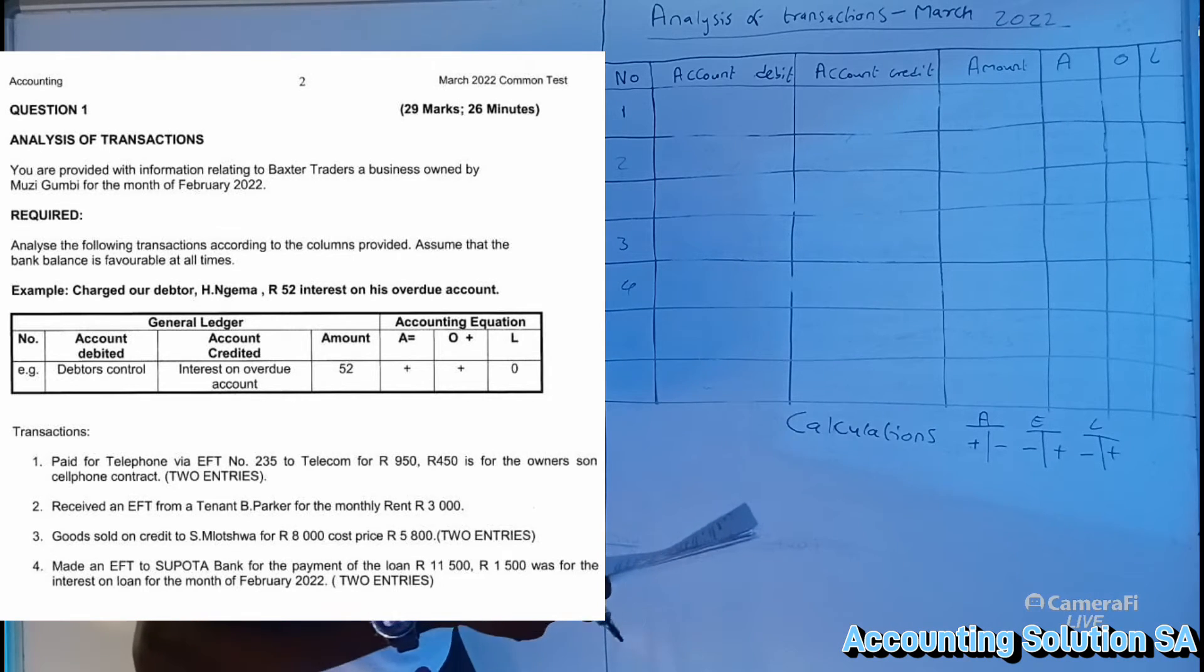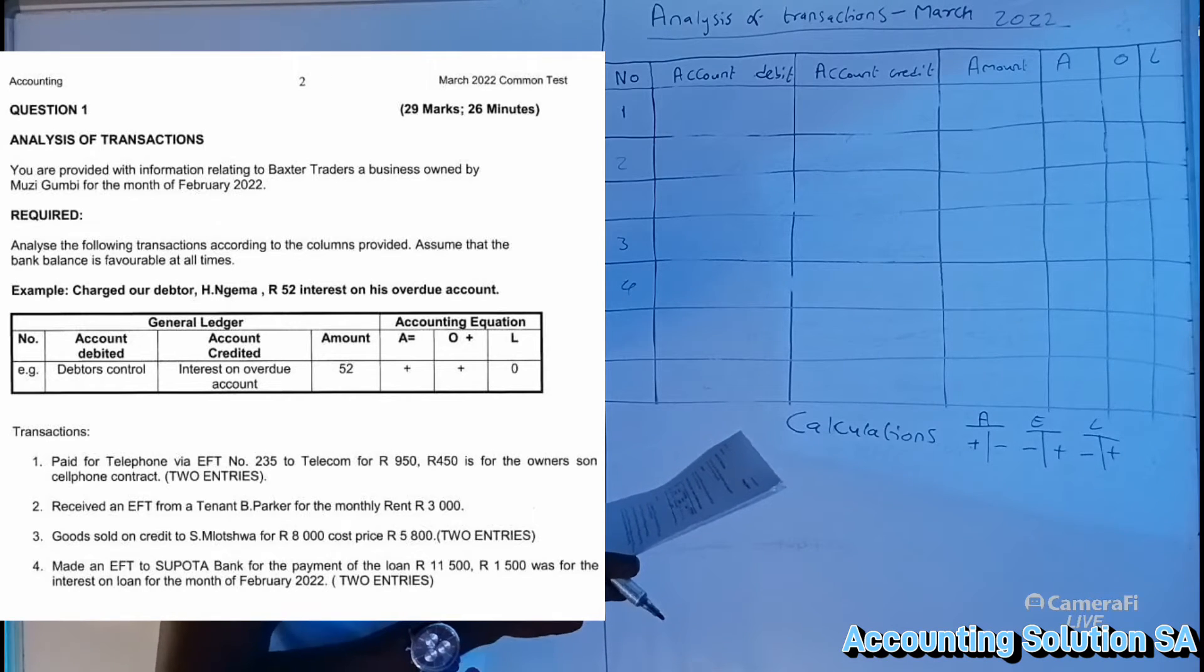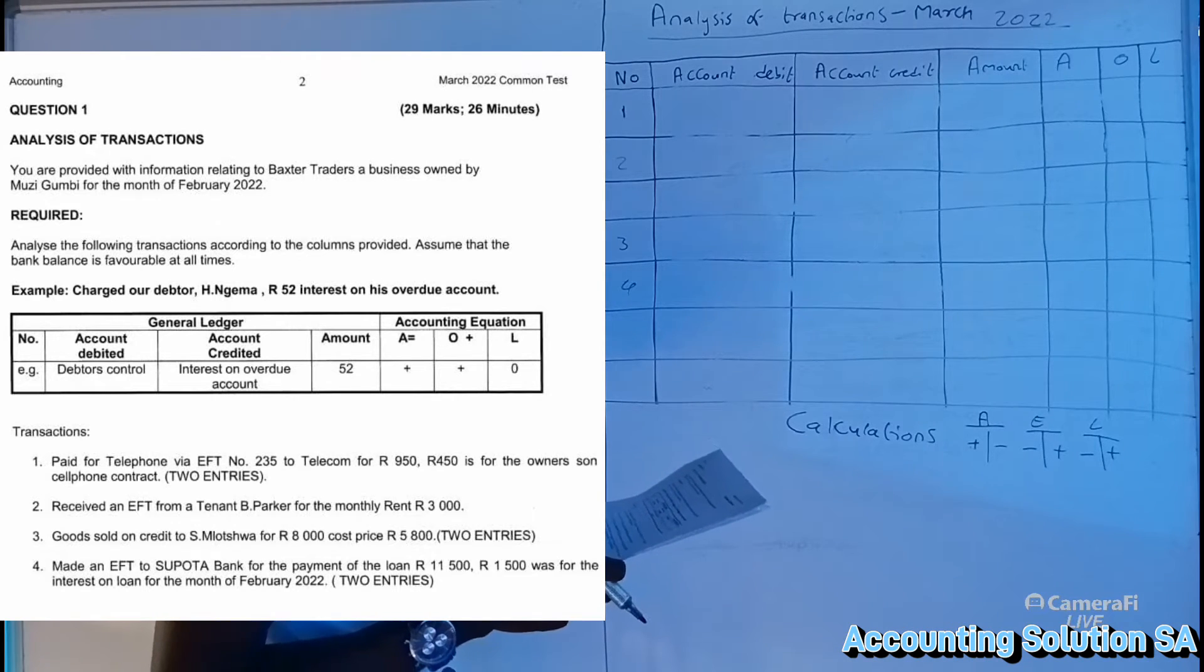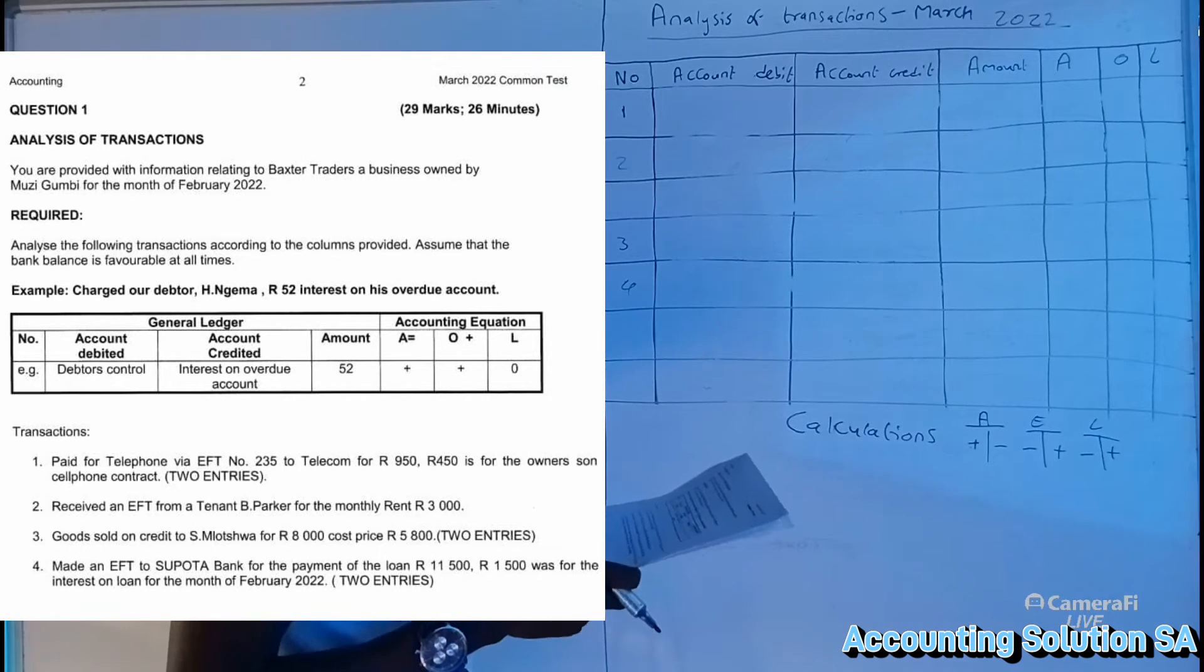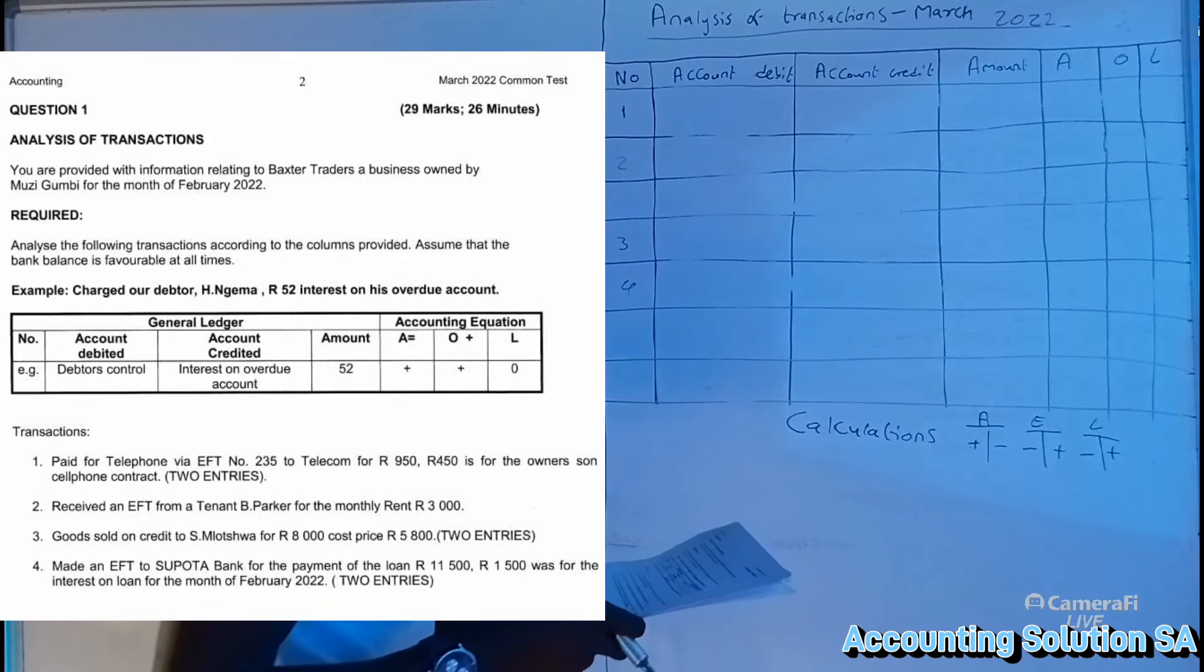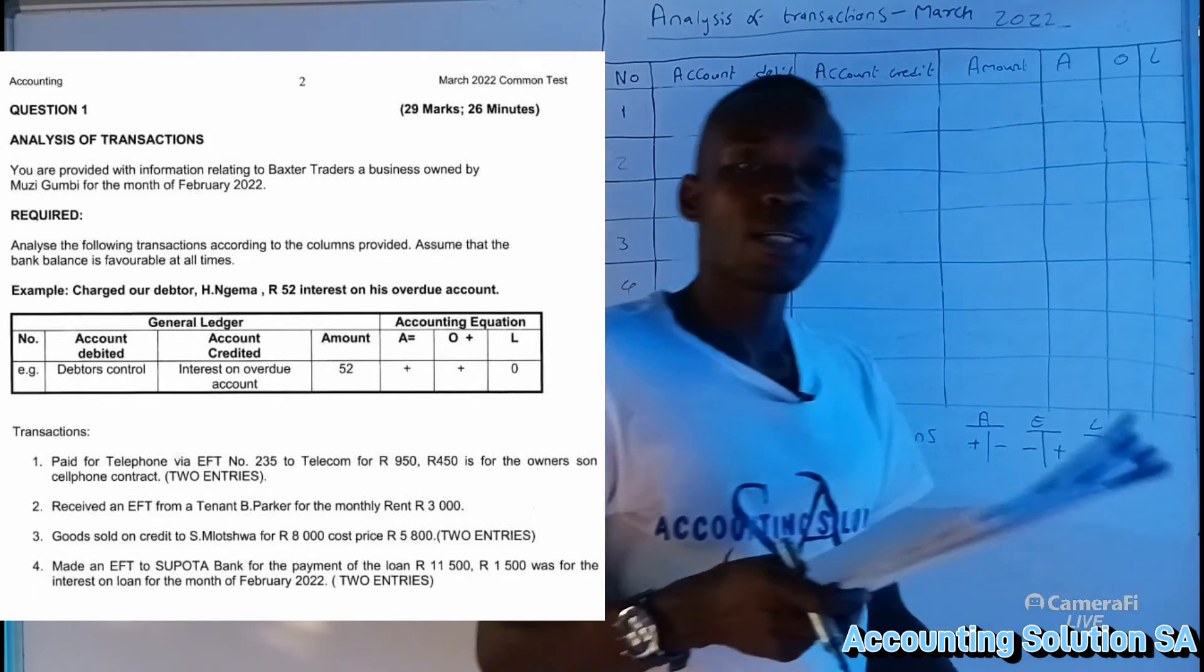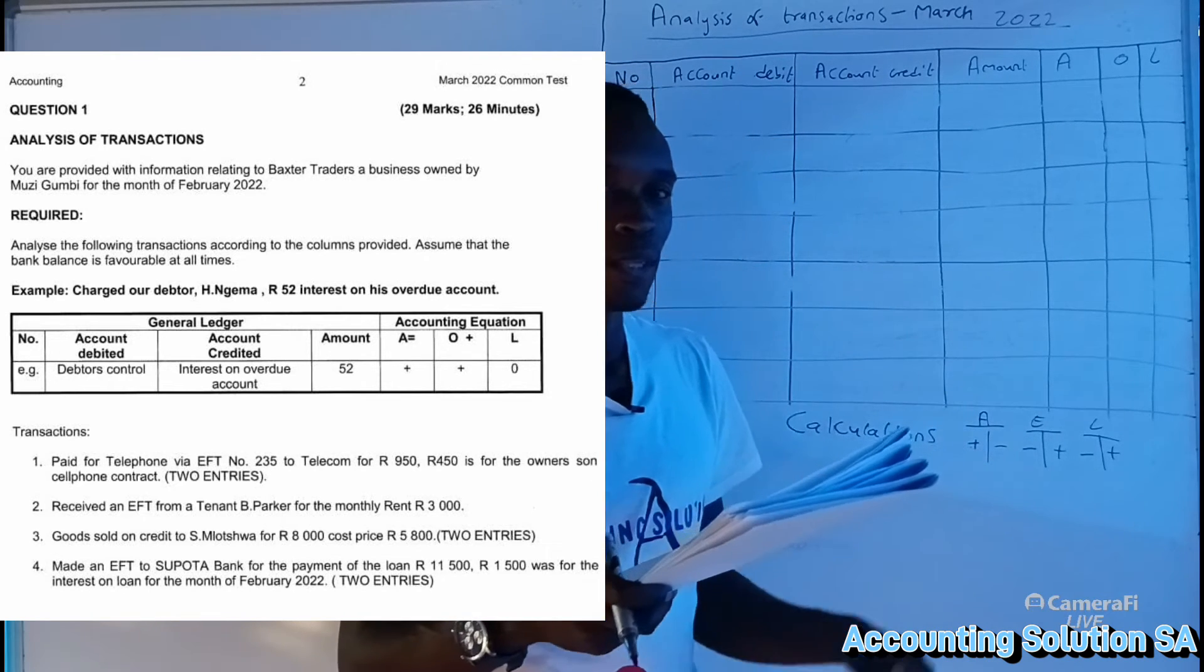Analyze the following transactions according to the columns provided. Assume that the bank balance is favorable all the time. They give us a table and example as well. Let's just go straight to the questions and ignore the example. Number one: paid for telephone via EFT number 235 to Telecom for 950 rand, and 450 is for the owner's son cell phone contract. Two entries need to be made in this case.